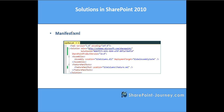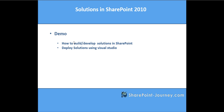The manifest.xml file is the important file whenever you are developing a solution — it says what are the components that will go along with this particular solution. In this example, one assembly is getting deployed to the Global Assembly Cache and the assembly name is SiteColumns.dll. It also has one feature, which is a folder 'SiteColumns', and this is the feature.xml which will get deployed to the root folder. Each WSP package will be defined by a solution ID mentioned in manifest.xml.